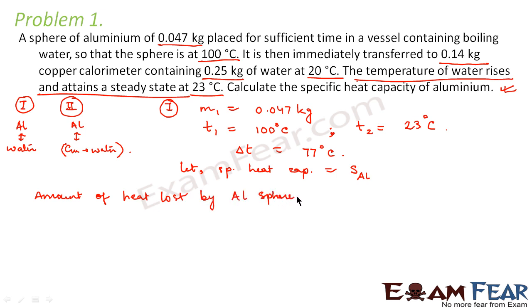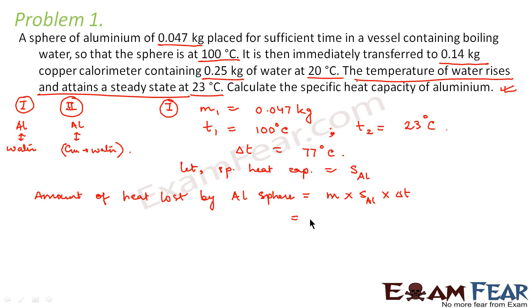The heat is lost by the aluminium sphere because initially the sphere was at 100 degree Celsius and after attaining a steady state it is at 23 degree Celsius, so there must be a loss of heat. The amount of heat lost will be M into S into delta T, which is 0.047 into S_AL into delta T.